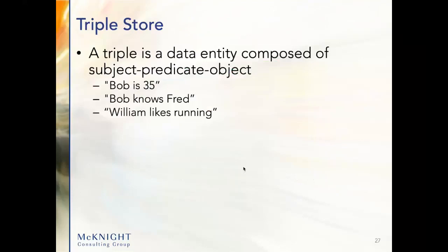A triple comprises subject, predicate, object. You can have a lot of fun with this: Bob is 35, Bob knows Fred, William likes running, and so on.